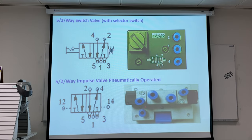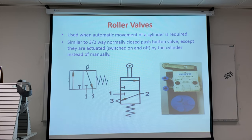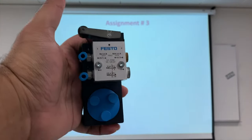There is a lever inside to open and close this valve. Next is the roller valve. The roller valve is used for the automatic movement of a cylinder. It is similar to a 3x2-way normally closed push button valve. If you see here, this is the symbol of the 3x2 push button closed valve — the symbol is the same but with an additional roller. Port 1 is the air supply, port 2 is the output port, and port 3 is for the exhaust.